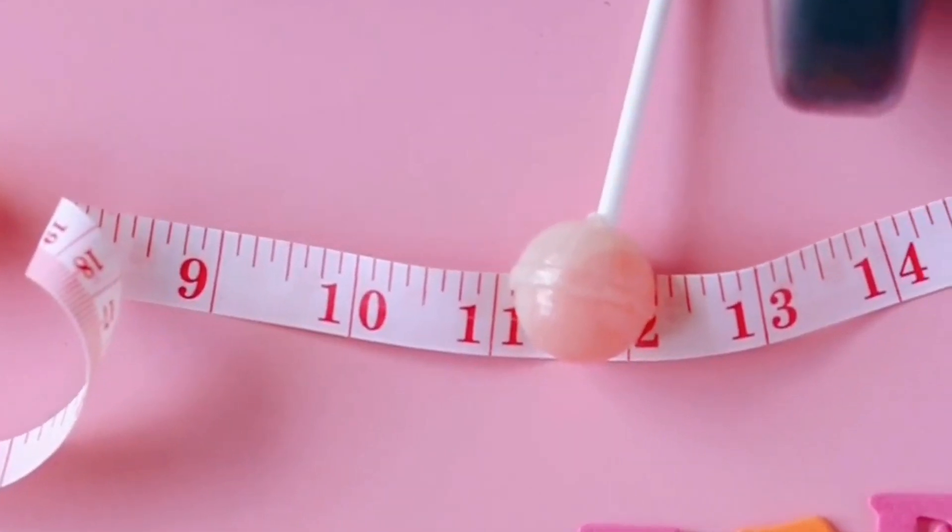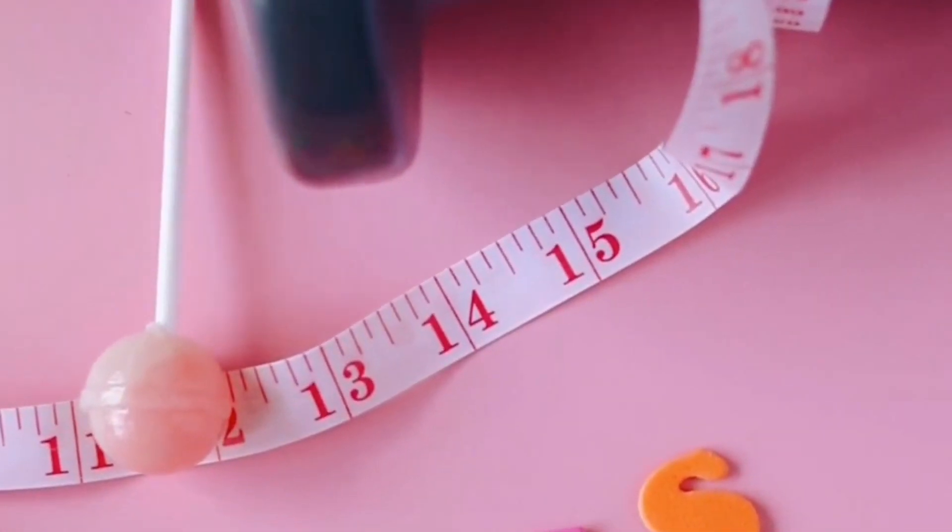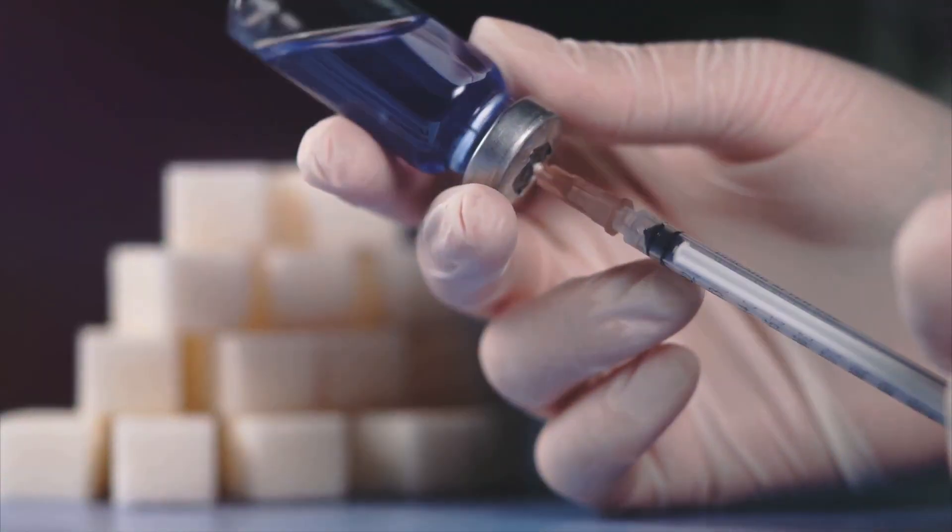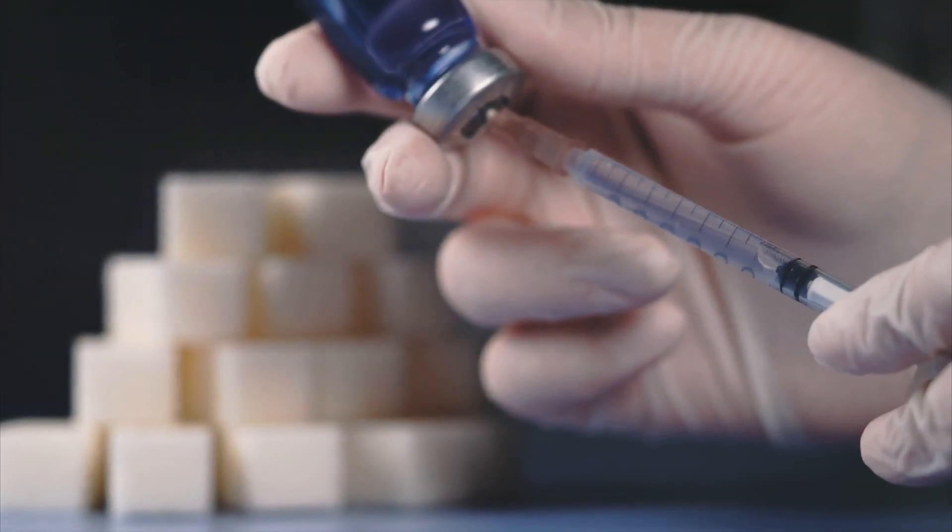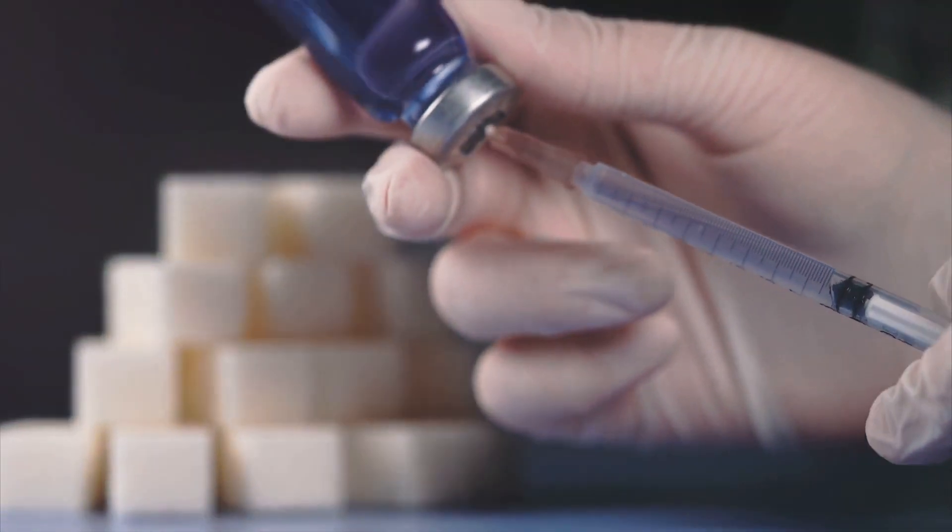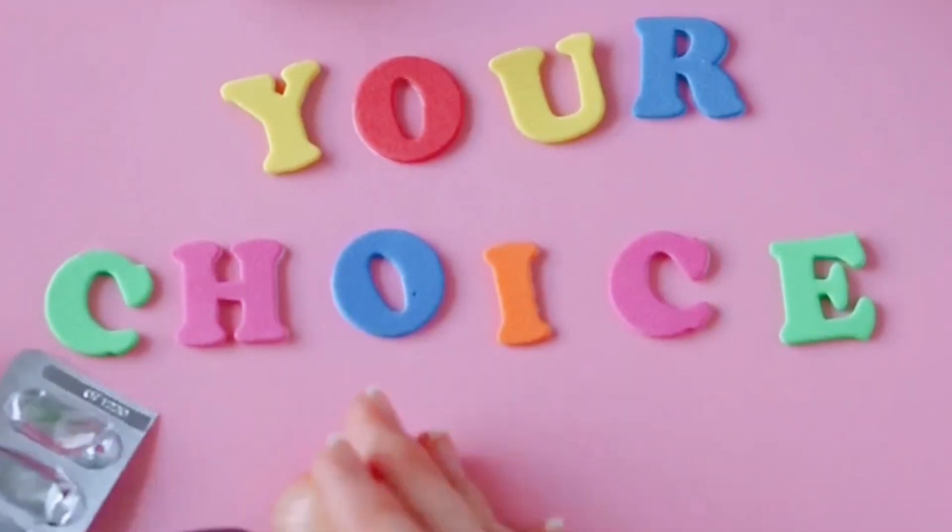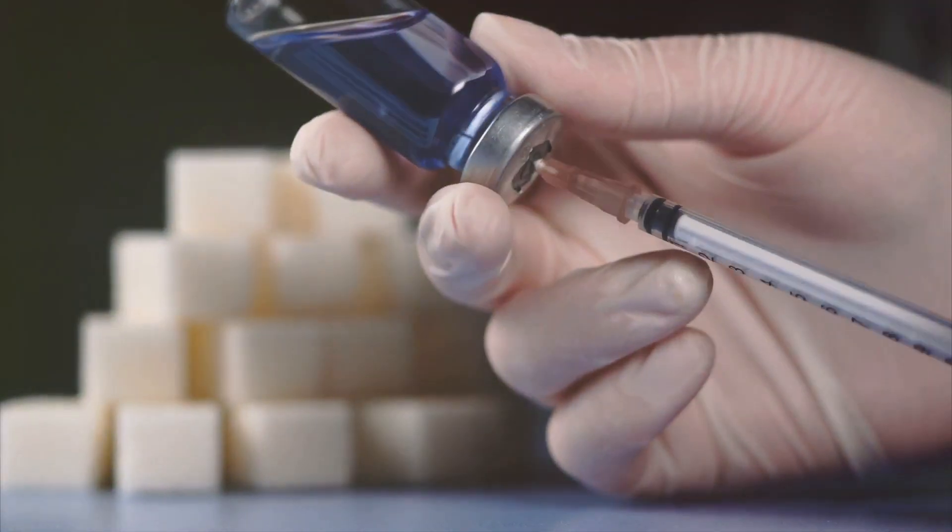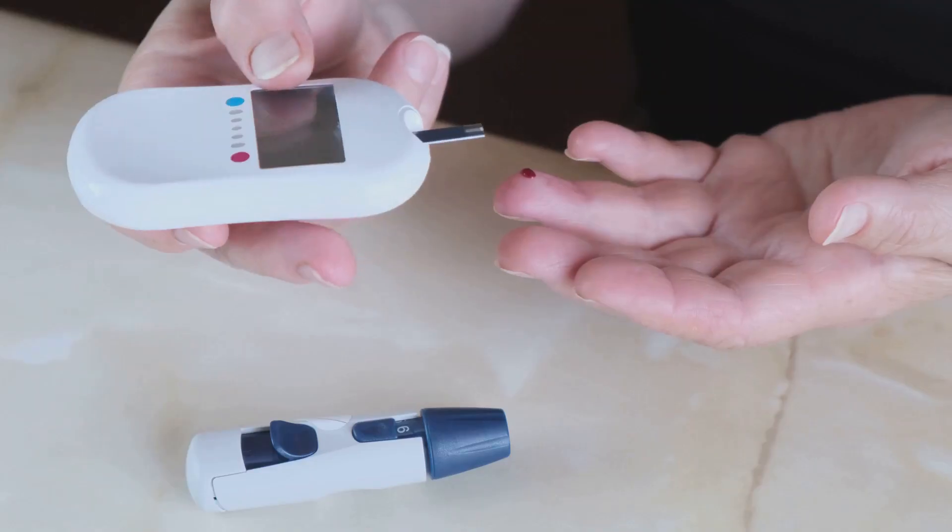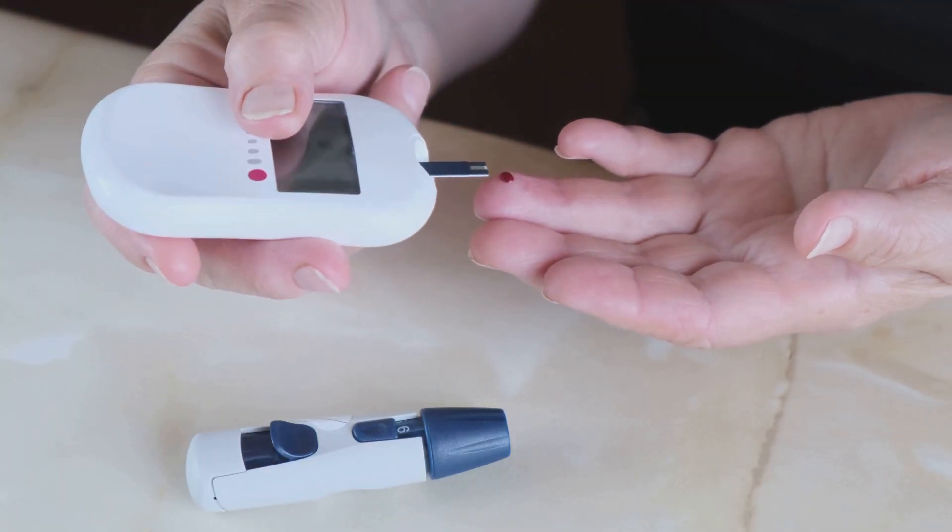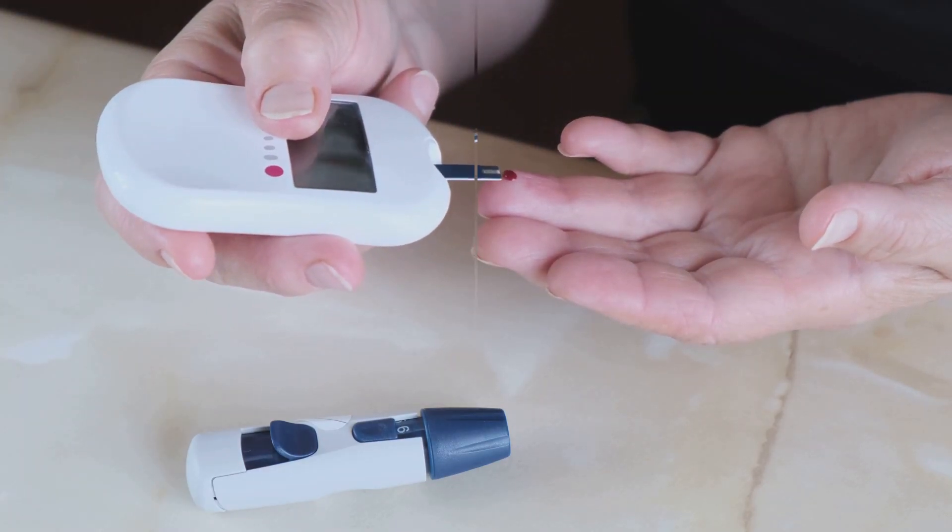In summary, both the OGTT and HOMA-IR offer detailed insights into your body's insulin response. They might require a bit more effort and resources than some other methods, but the information they provide can be invaluable in understanding your metabolic health. Remember, knowledge is power, especially when it comes to your health. With these tools, you can take control of your insulin sensitivity and make informed decisions about your lifestyle and diet.